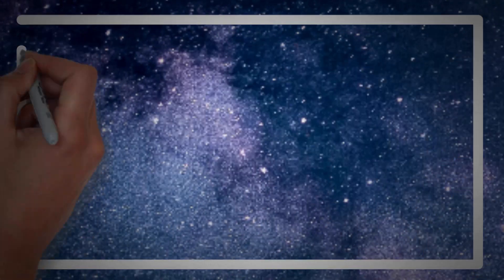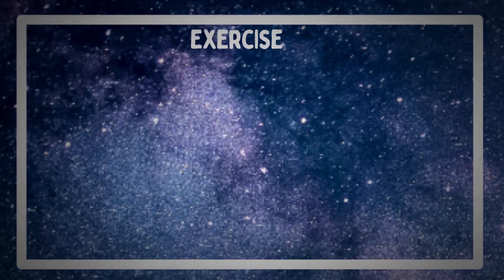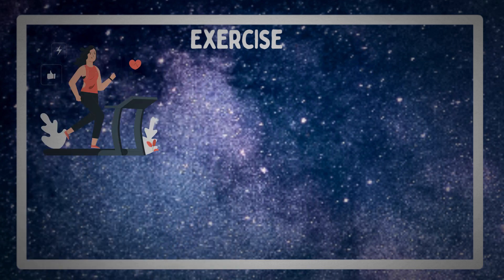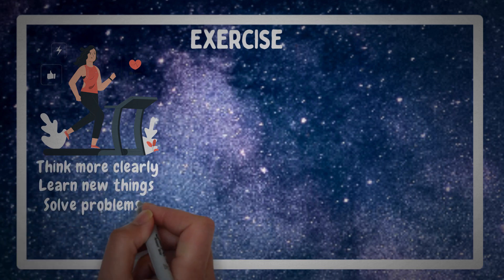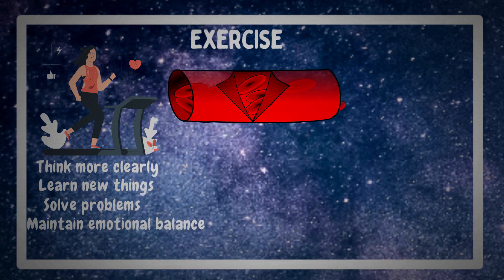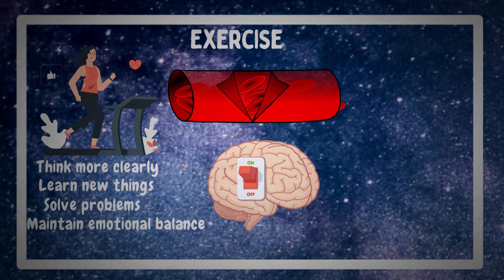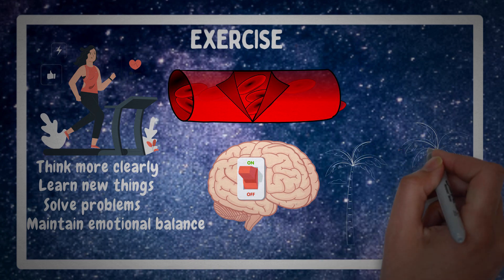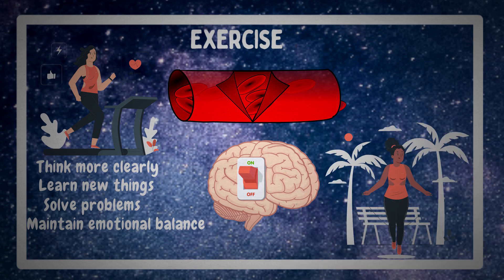Number 4: Exercise. Neuroscientists believe that everyone can improve their IQ by engaging in aerobic and cardiovascular activity. Exercise can help you think more clearly, learn new things, solve problems, and maintain emotional balance. Our blood receives more oxygen while we exercise, and thus our brain operates more vigorously. People who exercise frequently hardly experience any neurological issues. Additionally, exercise lowers anxiety and depression, so get in the habit of exercising daily.